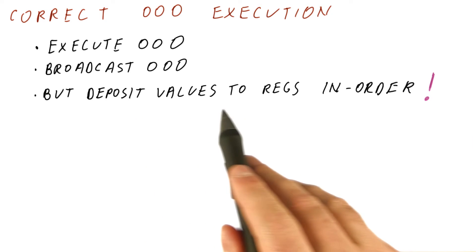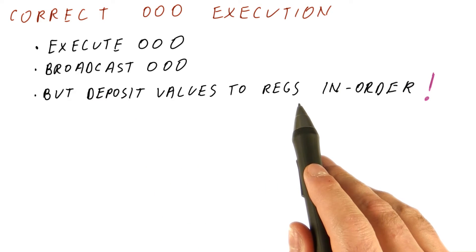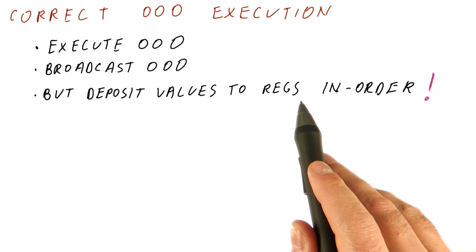This is needed because if we deposit register values out of order, then if we subsequently discover that one of the earlier instructions shouldn't have been done, like it has an exception or a branch misprediction, then this instruction has already deposited and it shouldn't have.